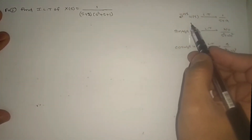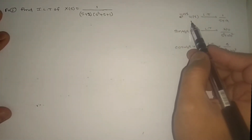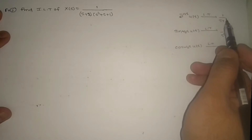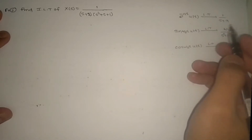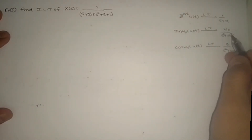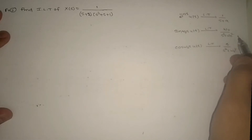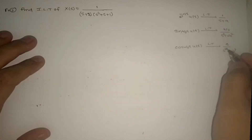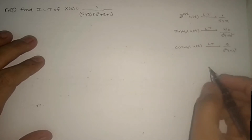Here we know the basic formulas: e^(−at)u(t) has Laplace transform 1/(s+a). sin(ω₀t)u(t) has Laplace transform ω₀/(s²+ω₀²). cos(ω₀t)u(t) has Laplace transform s/(s²+ω₀²).